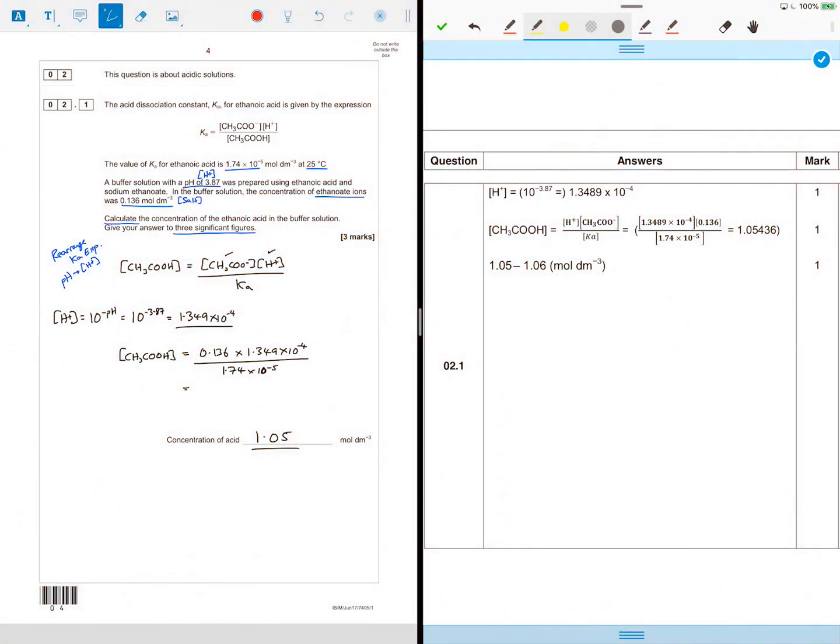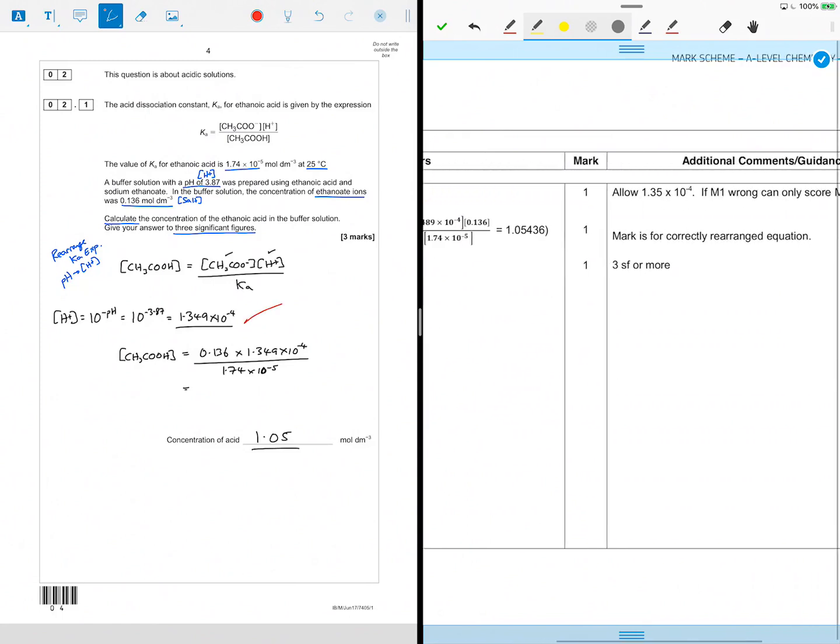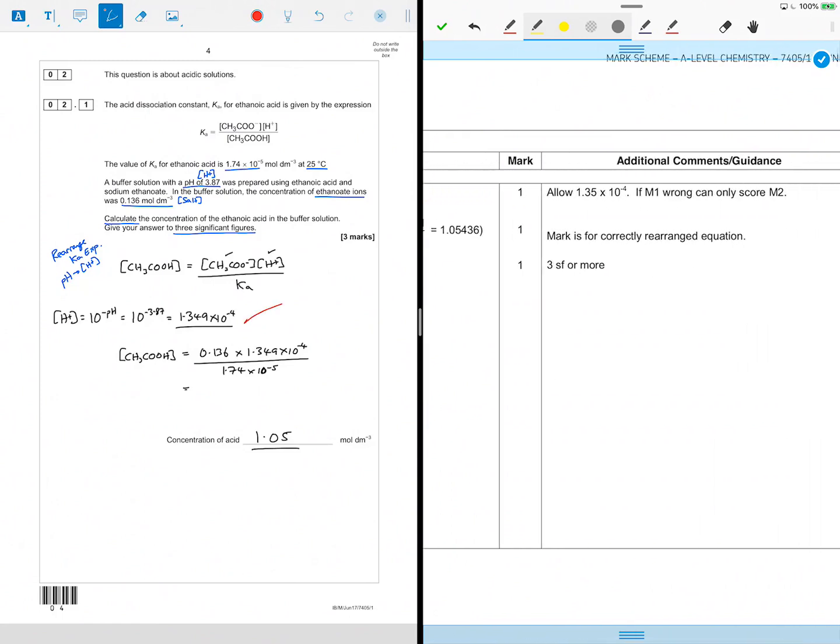Question two mark scheme. Here we were looking to find the concentration of the acid using the Ka expression for ethanoic acid. We got one mark for finding the hydrogen ion concentration, which is 1.3489 times 10 to the minus 4. Allow 1.35 times 10 to the minus 4, so that's fine.